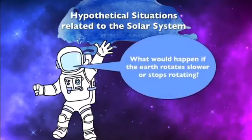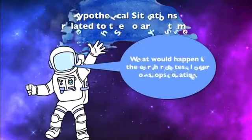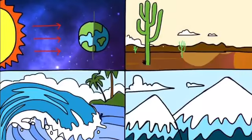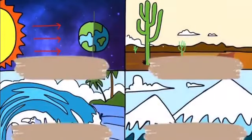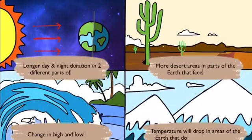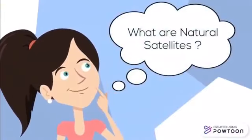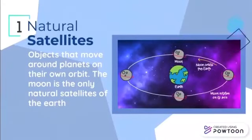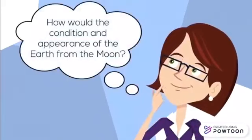What would happen if the Earth rotates slower or stopped rotating? What are natural satellites? How would the condition and appearance of Earth look from the moon?